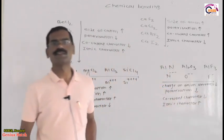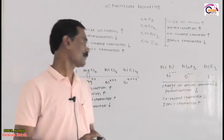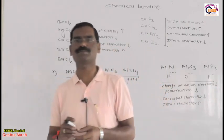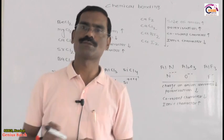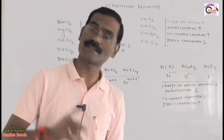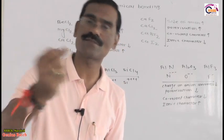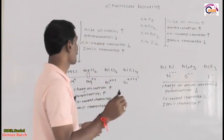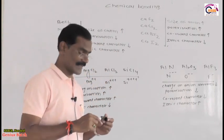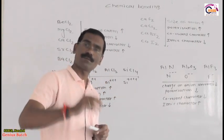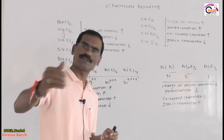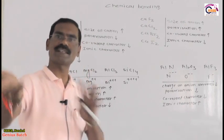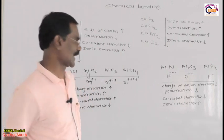These are very important concepts related to polarization, also called Fajans' rule. You should have no problem understanding that covalent character or polarization is directly proportional to charge on cation, charge on anion, and size of anion, and inversely proportional to the size of cation.